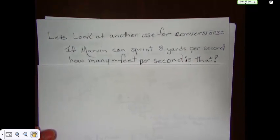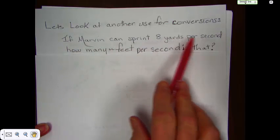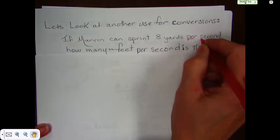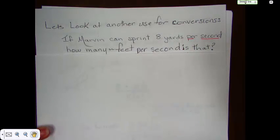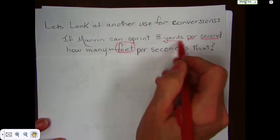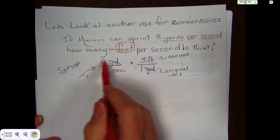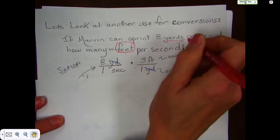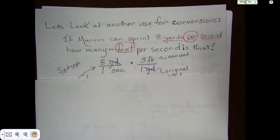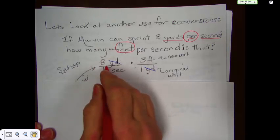Let that soak in for a second. Now, we're going to do just a little bit different use of conversions. It works pretty well. But, you're going to have to listen and copy everything down carefully so that you understand what this is. We're going to look at a different use. If Marvin can sprint 8 yards per second. Now, we want to keep track of the per second. How many feet per second is that? Feet. We are looking for feet. They give us yards. We're looking for feet. So, our conversion answer should be in feet form.